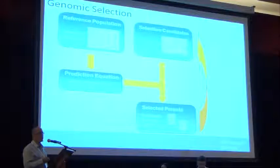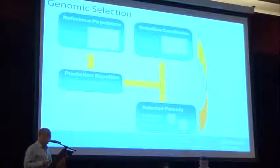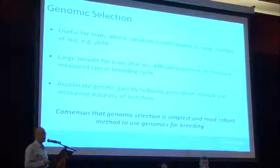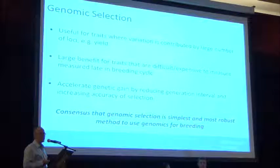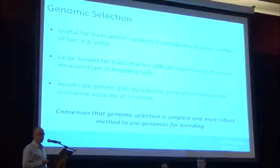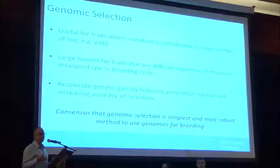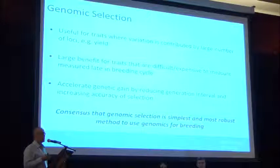Eventually these selected individuals create offspring and the whole cycle starts over again. This method is really useful for traits contributed to by many loci — yield is certainly one. It has large benefits for traits that are difficult or expensive to measure or measured late in the breeding cycle. It accelerates genetic gain by shortening the generation interval, increasing the accuracy of selection, and increasing selection intensity.